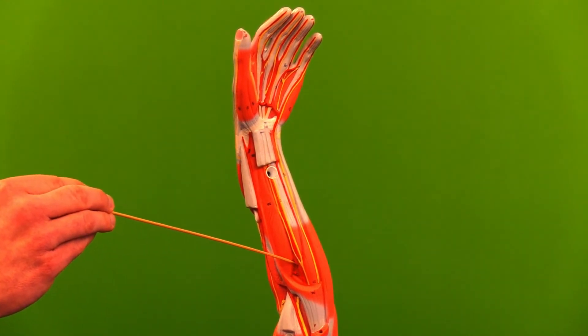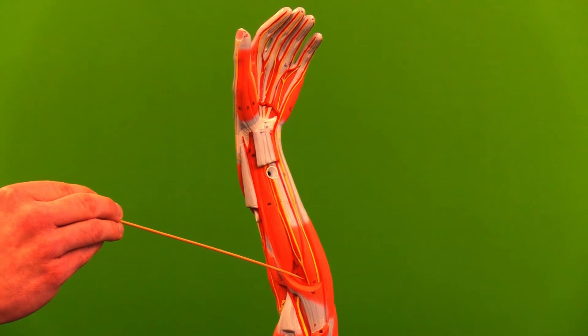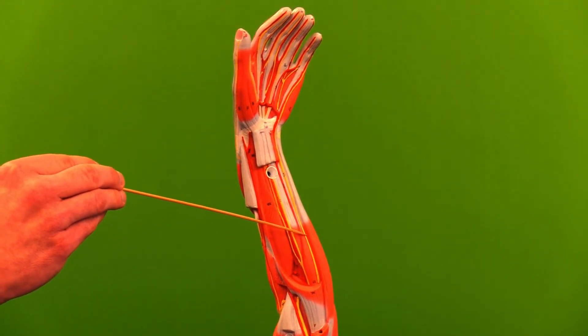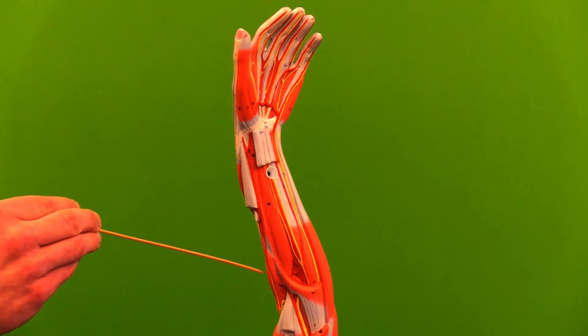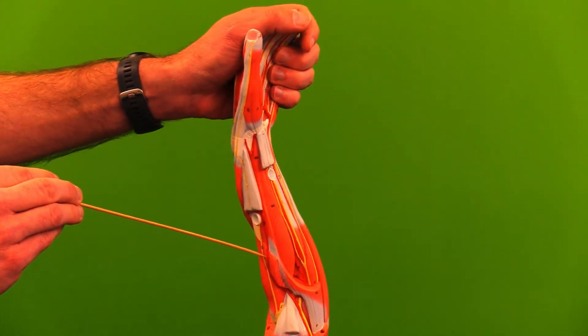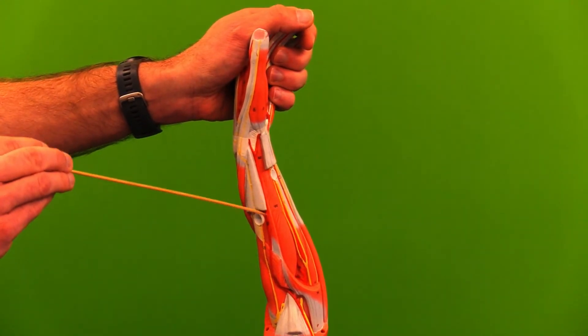We can see that our artery flows further into the ulnar artery, and on the opposite side, we've got our radial artery.